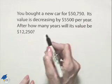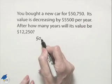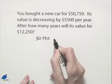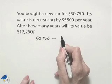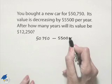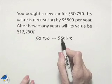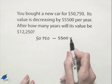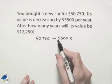Well, let's start off with the fact that it's originally worth $50,750. We're decreasing, which means we're subtracting off $5,500 for each year. So if we let x equal the number of years that have passed, we have $5,500 multiplied times the number of years. That tells us how much of a decrease we end up with.